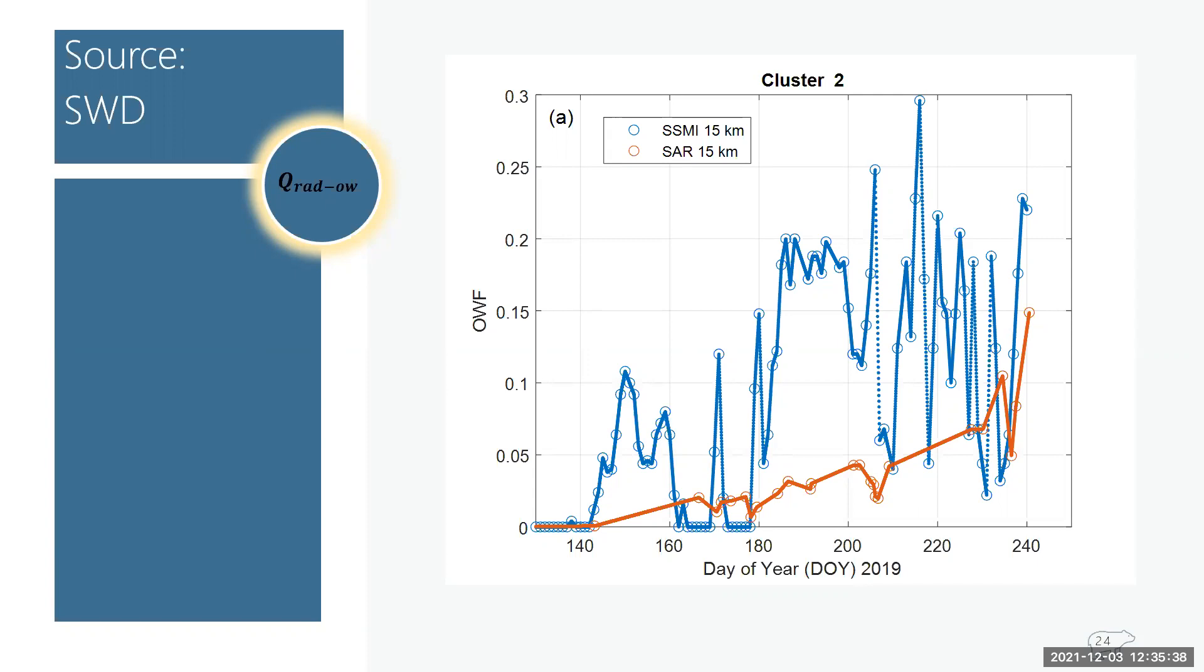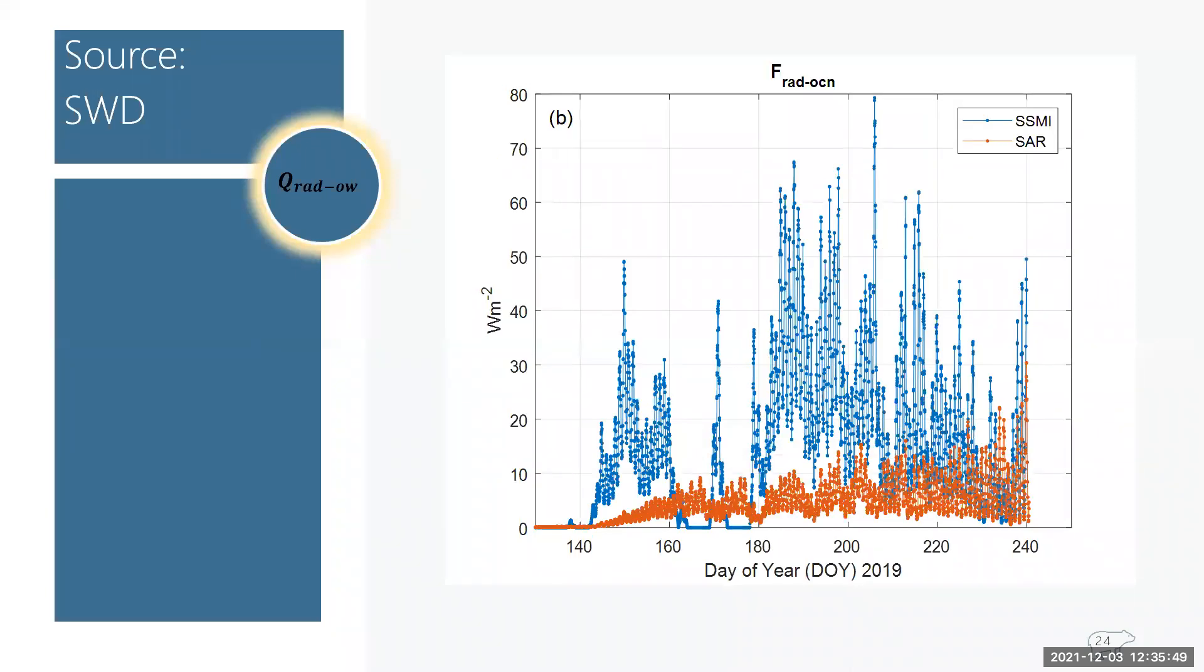So taking the solar radiation data from model reanalysis and scaling it to how much can enter the open water, it's represented as FRAD of OW, or the flux, and that's seen here in figure B, where the y axis is in watts per square meter. And again, SSMI is in blue and SAR is in orange. And you can see that they definitely don't agree from how much open water there is and then how much flux there is. There's definitely a large difference.